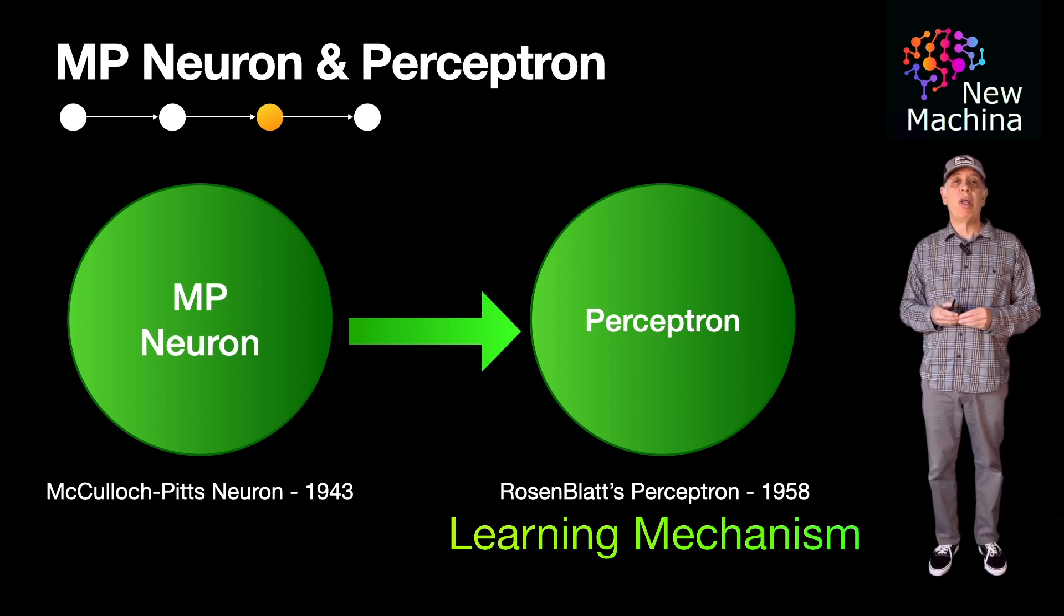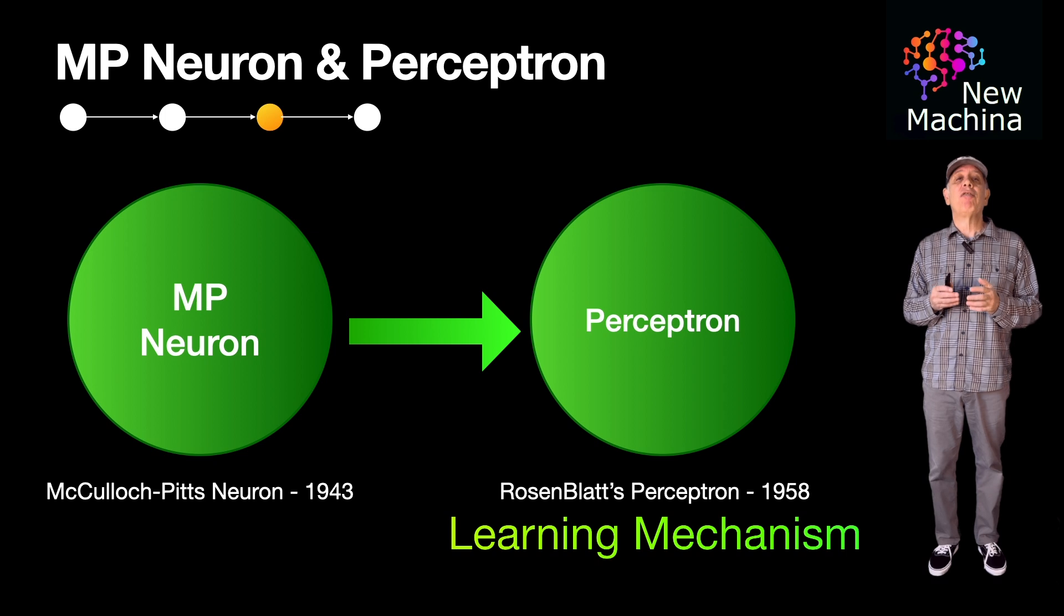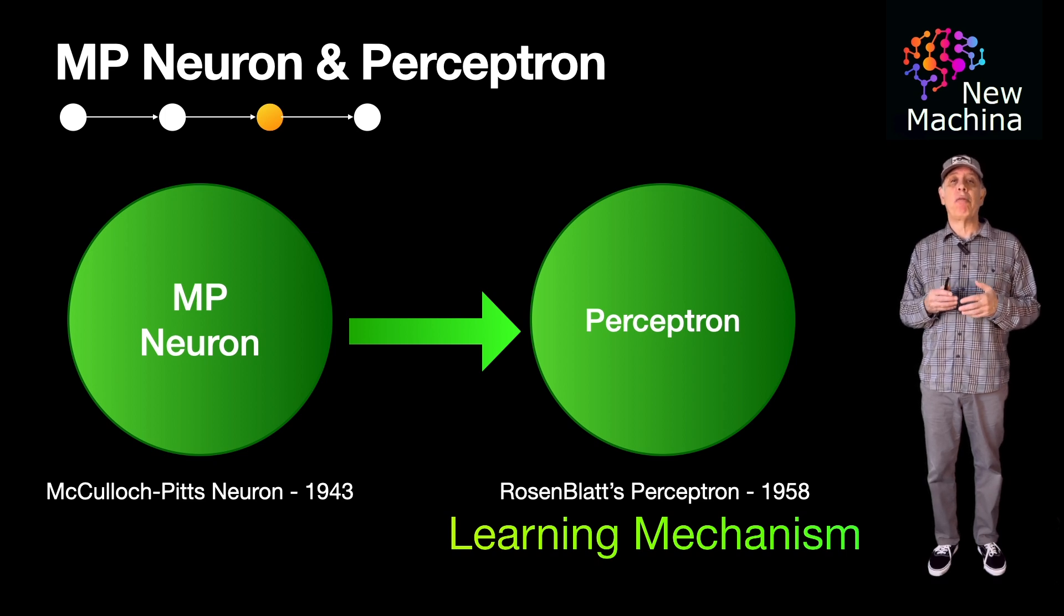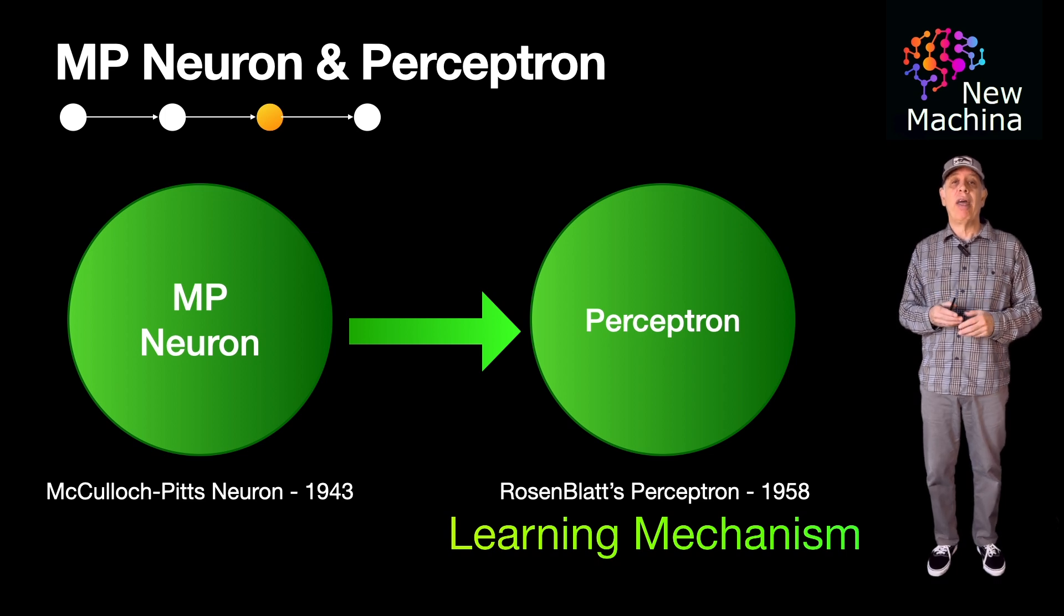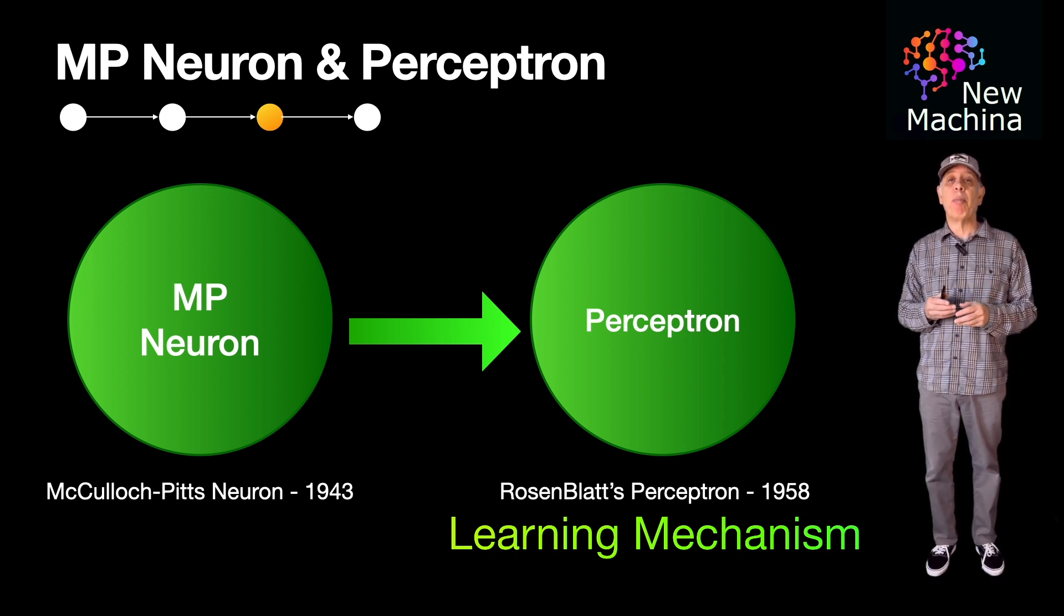In summary, while this single perceptron, as presented by Rosenblatt in 1958, has limitations, its significance lies in its role as a fundamental building block for more complex architectures that can solve a wide variety of computational tasks, making it essential to neural network-based computing and AI development.